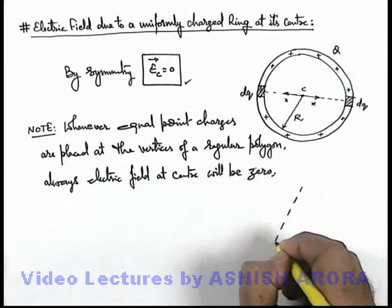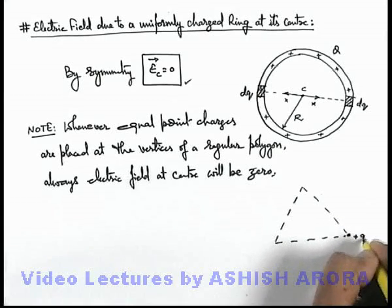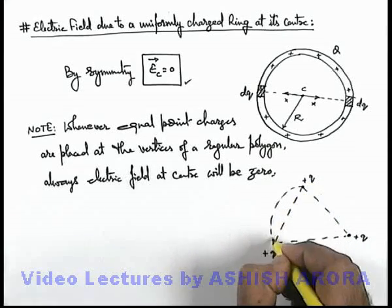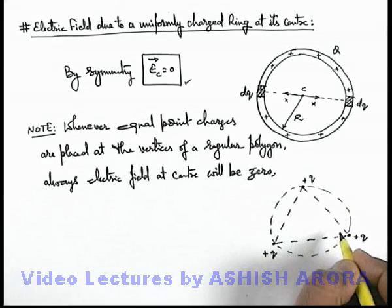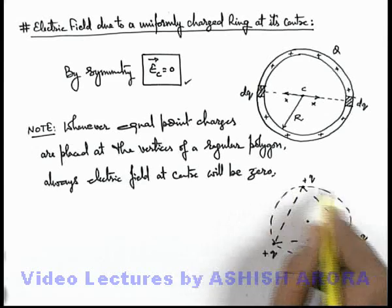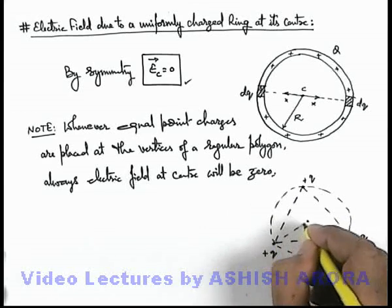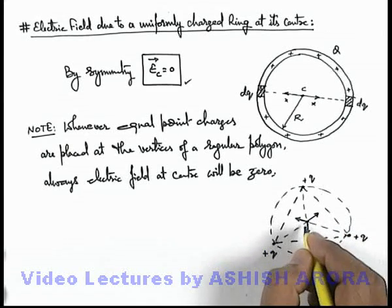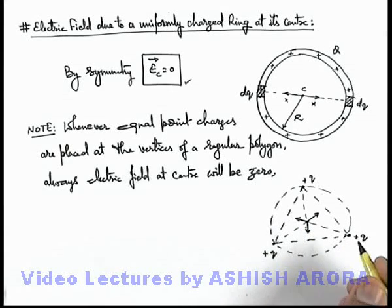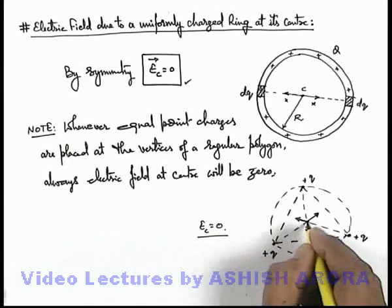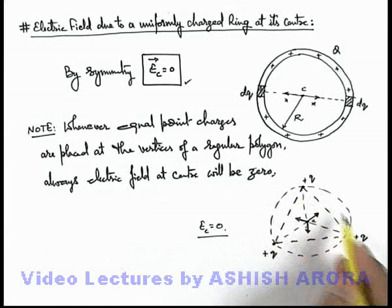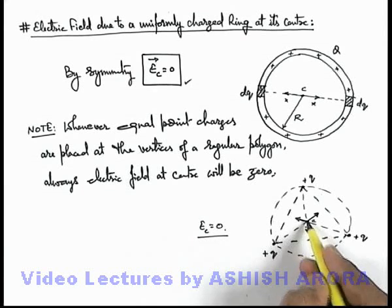For example, on an equilateral triangle, three equal charges +q are placed. By symmetry we can say that these three charges are uniformly placed on a ring at equal separation from each other. Then at the centroid, which is the center of the ring, the electric field due to all three charges will cancel each other, because these are equal magnitude electric fields at the center in a symmetrical manner. So the vector sum of these equal vectors at equal angles will always be zero, and the electric field at the center in this situation is also zero.